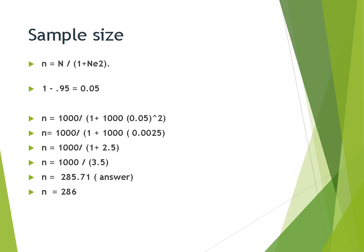So 1 minus 0.95 is 0.05. So 1,000, that's your capital N. 1 plus 1,000. And then your margin of error is 0.05. How are you going to process this one so that you will not be mistaken when you compute your sample size? First of all, you have to process first your margin of error. 0.05 raised to the second power gives you 0.0025. And then 1,000 divided by the quantity 1 plus 1,000 times 0.0025. So this one is the second processing.